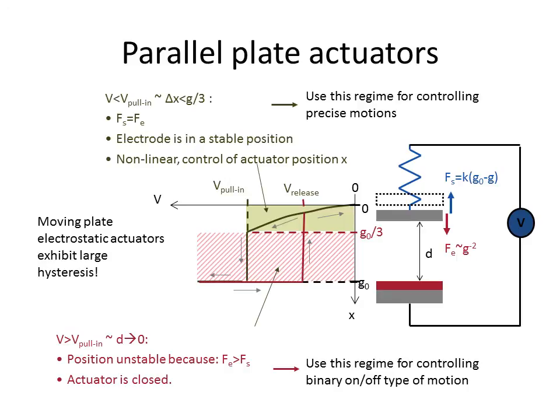So I have two regimes. Either I have a linear control or I have an on-off control. And the on-off control is of course if I go over the pull-in voltage. And the linear control is if I stay below the pull-in voltage.